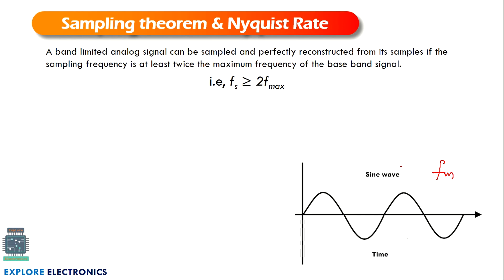the sampling theorem says a band-limited analog signal can be sampled and perfectly reconstructed from its samples if the sampling frequency is at least twice the maximum frequency of the baseband signal. If FM is the maximum frequency of the baseband signal, and the sampling frequency is FS, then FS should be greater than two times FM.